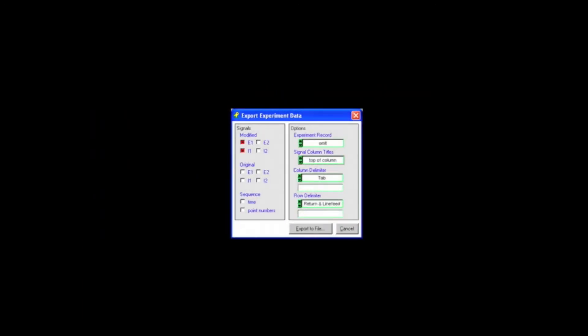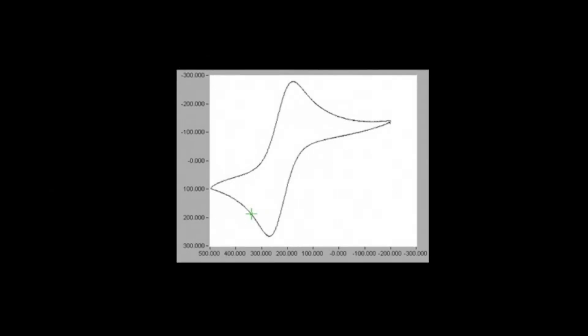After the second experiment has been completed and the data has been obtained, it needs to be exported for analysis. Under the file menu, click export. Only the E1 and I1 data is needed. All other boxes can be unchecked as shown. When graphed, the data should look similar to the plot shown.